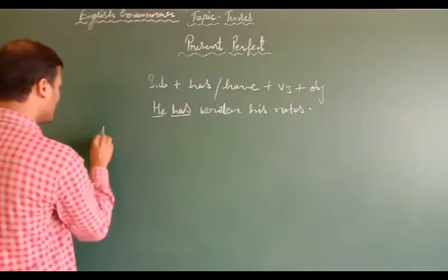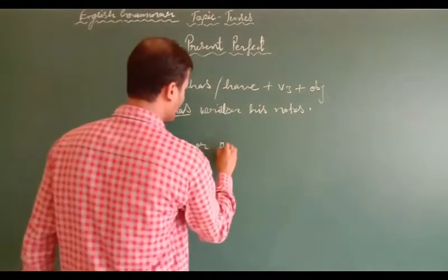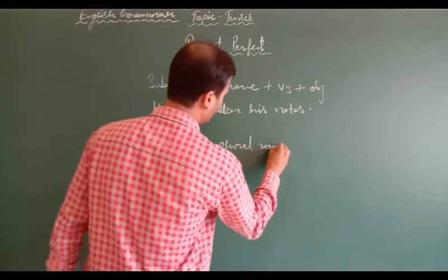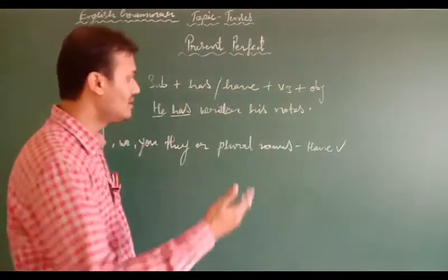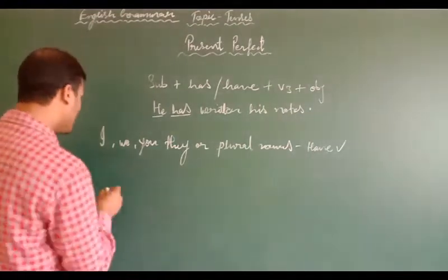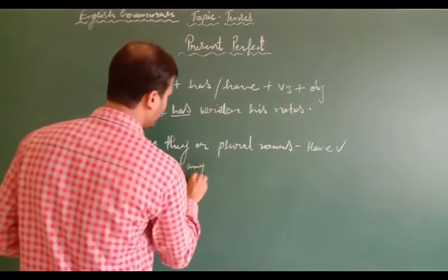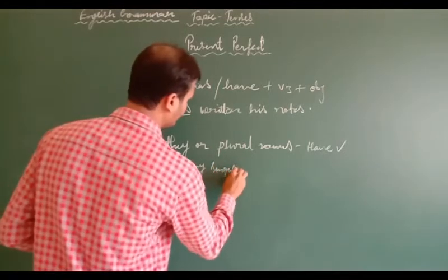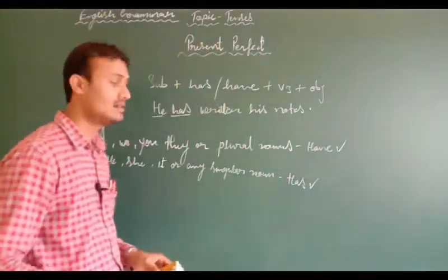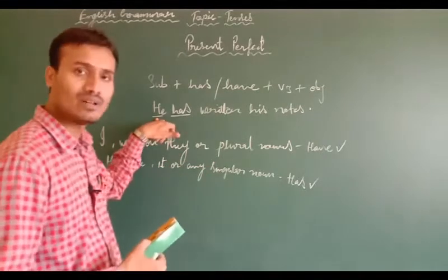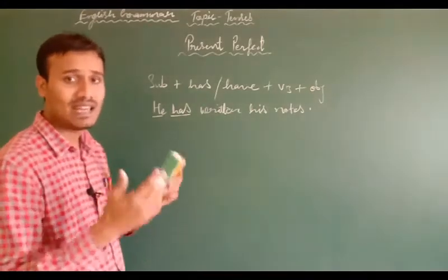Let me make it clear when you have to use has or have in a sentence. If your sentence begins with I, we, you, they, or plural nouns, then you have to use 'have'. And if the sentence begins with he, she, it, or any singular noun, then you have to use 'has'. So when you have to use has — if it is singular or third person, you use has. Hope you would have understood when to use has and have in your English sentences.